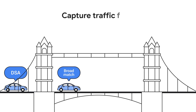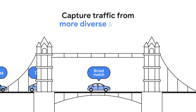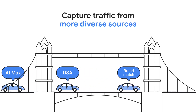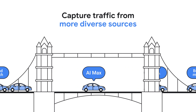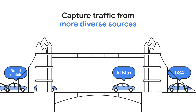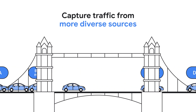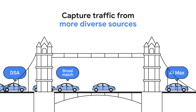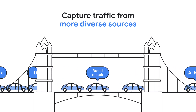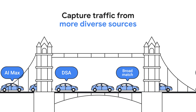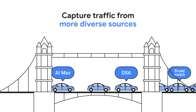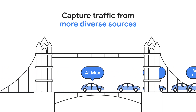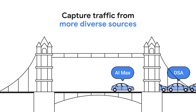Using Smart Bidding Exploration can help you capture traffic from more diverse sources. More opportunistic AI-powered bidding taps into performance from a wider range of unique search categories. Smart Bidding Exploration makes the most of your existing targeting methods — Broad Match, DSA, AI Max, etc.